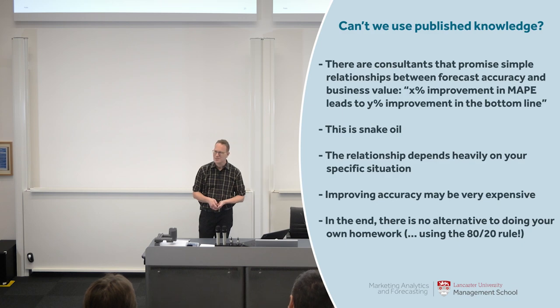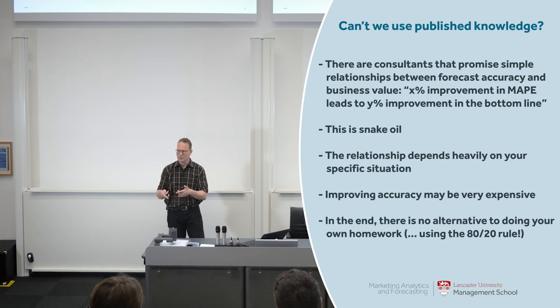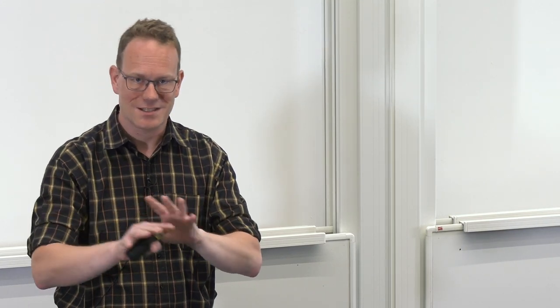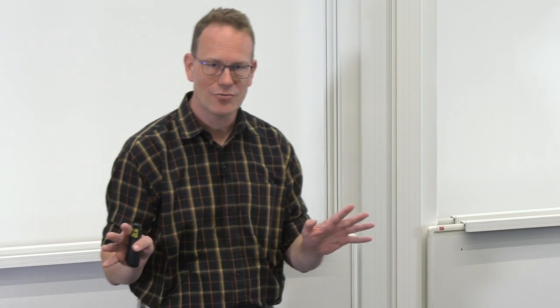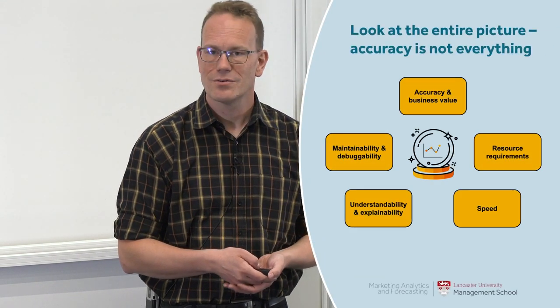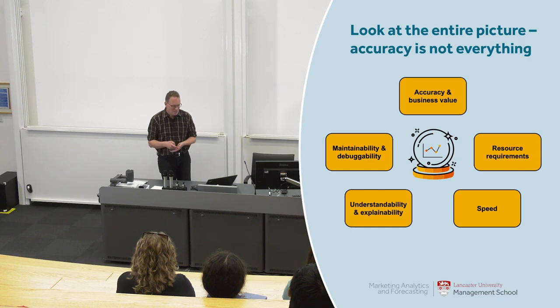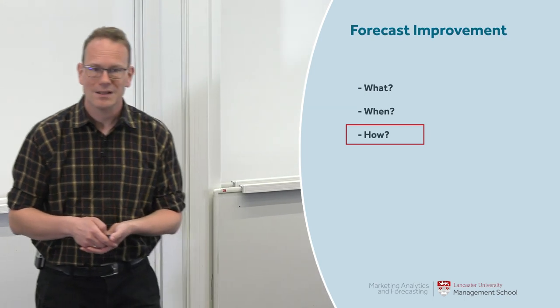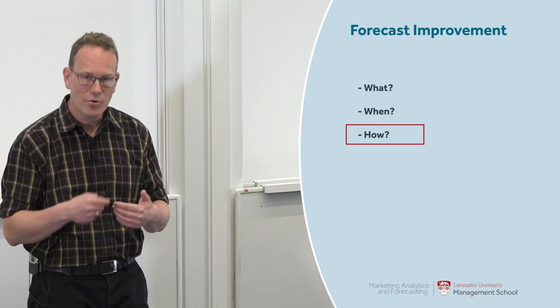In the end, there is no alternative to doing your own homework, using the 80-20 rule. Don't model your entire supply chain to find the relationship between accuracy and business value — that's prohibitively complicated. Just do an 80-20 approximation, but that's exactly why you need your own experts to do that. Accuracy is not everything. Now let's go to how we actually improve the forecast.